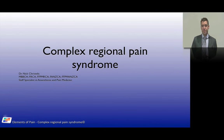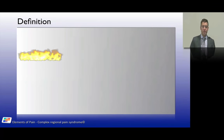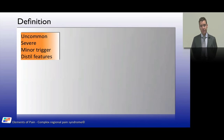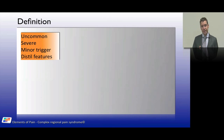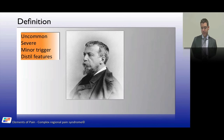Welcome to this talk on complex regional pain syndrome. In a couple of words, CRPS is an uncommon pain condition — it's severe, there is normally a minor trigger, sometimes it can occur spontaneously, and it leads to distal changes. A key factor is that it's burning pain, which is represented by those flames.